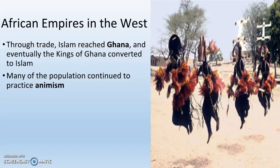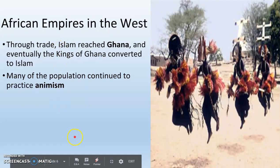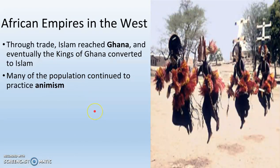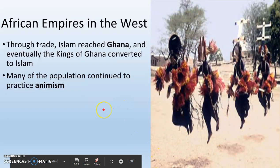Prior to the introduction of Islam in sub-Saharan Africa, most people are animist — they practice animism, which is kind of like the belief in nature spirits, similar to Native Americans. But a lot of Africans are going to adopt Islam and become Muslim. And in a lot of places, animism and Islam kind of combine into one combination religion.